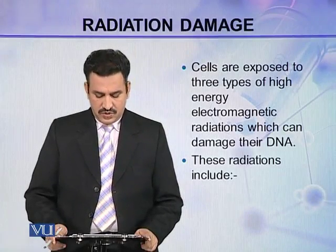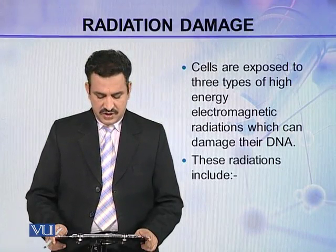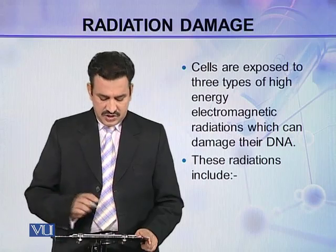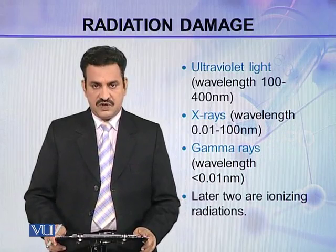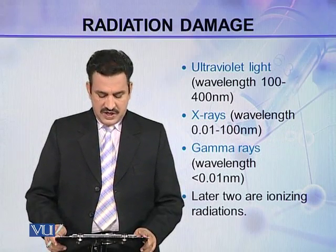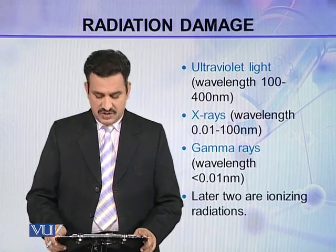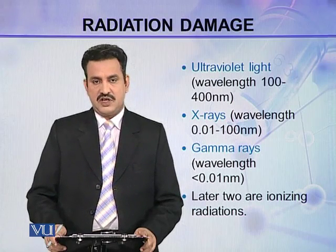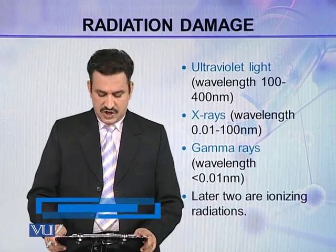Cells are exposed to three types of high-energy electromagnetic radiations which can damage their DNA. These radiations include ultraviolet light, which has a wavelength between 100 to 400 nanometers; X-rays, having a wavelength between 0.01 to 100 nanometers; and gamma rays, having a wavelength lesser than 0.01 nanometers.